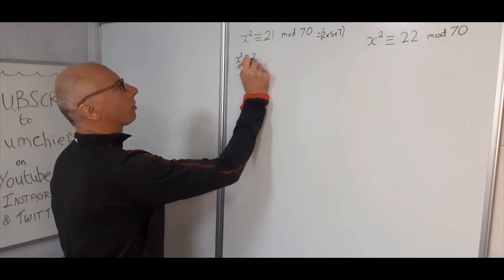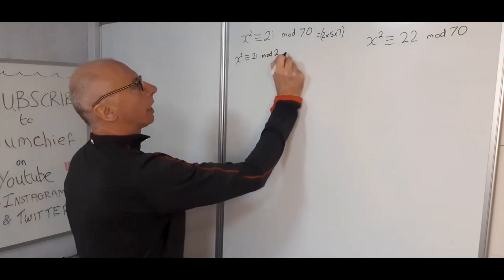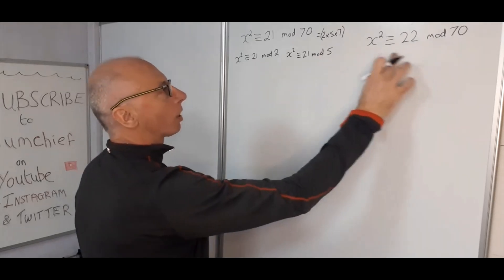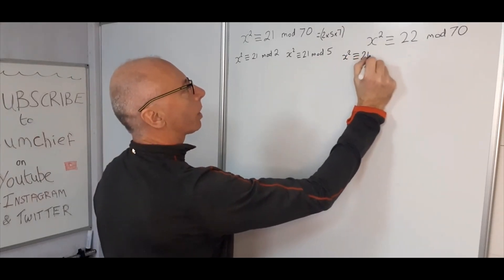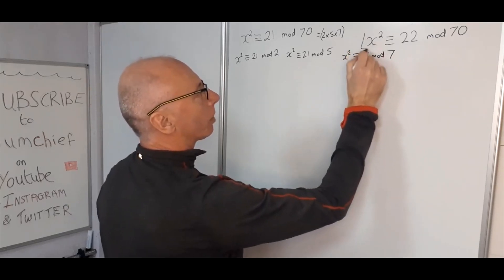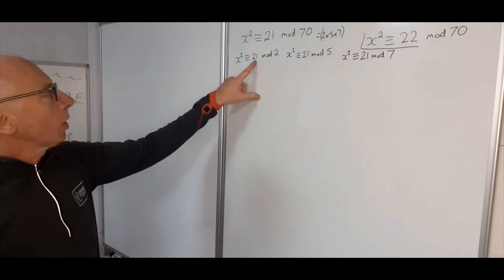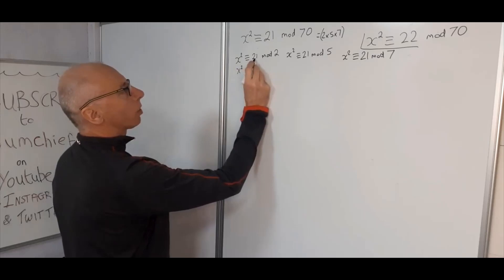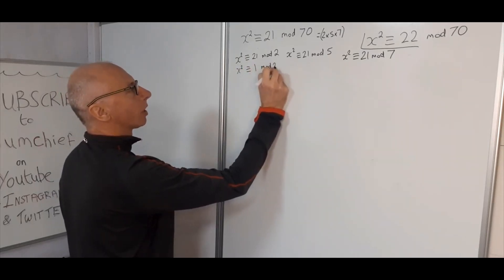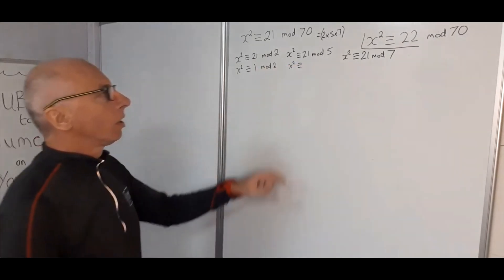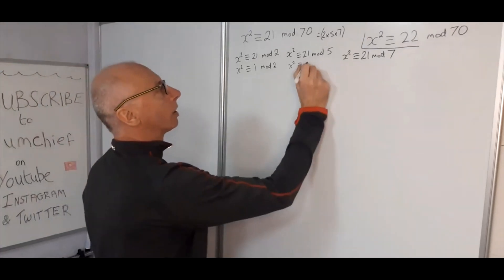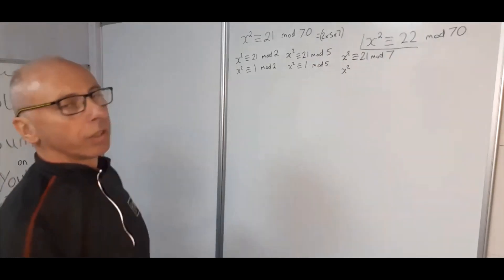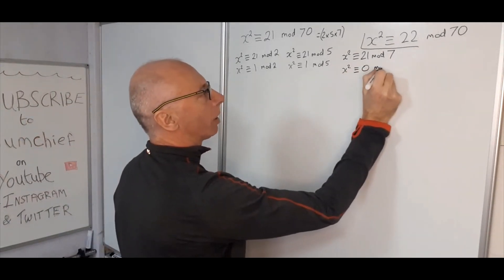For x squared congruent with 21 mod 70, we get three sub-congruences: x squared congruent with 21 mod 2, x squared congruent with 21 mod 5, and x squared congruent with 21 mod 7. Reducing these, 21 mod 2 is 1, 21 mod 5 is 1, and 21 mod 7 is 0. So we have x squared congruent with 1 mod 2, x squared congruent with 1 mod 5, and x squared congruent with 0 mod 7.